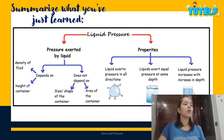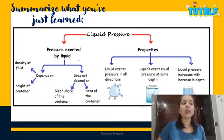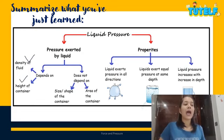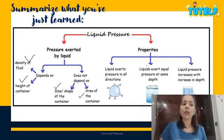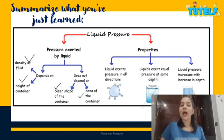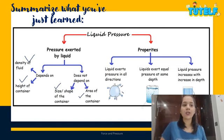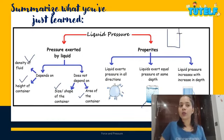To summarize: liquid pressure is the pressure exerted by a liquid. It depends on the density of the fluid and the height of the liquid column. It does not depend on the size, shape, or area of the container. Key properties are: liquid exerts pressure in all directions, equal pressure at the same depth, and pressure increases with increase in depth.